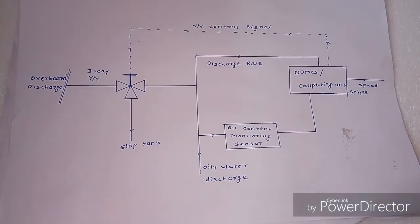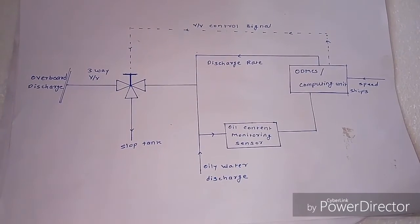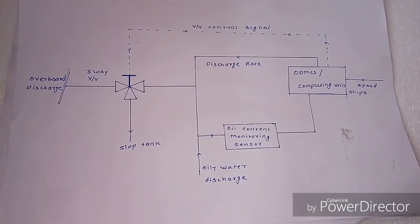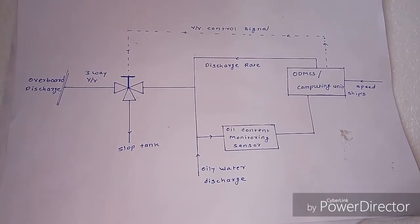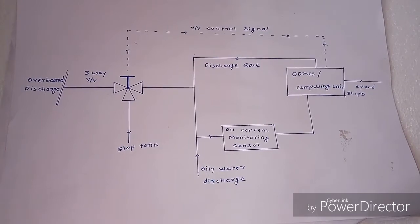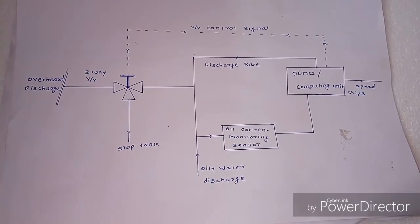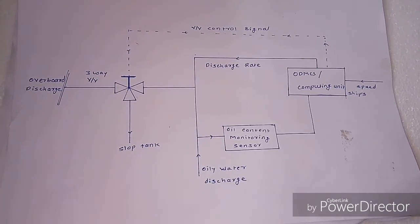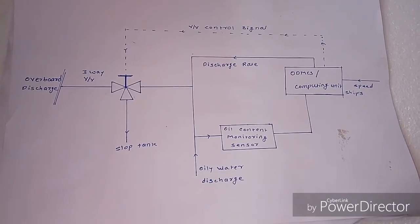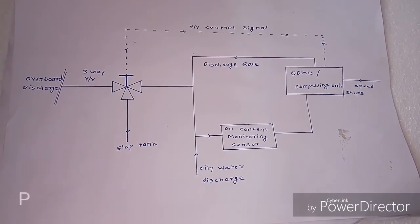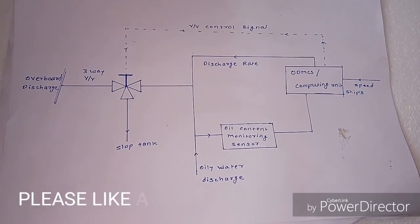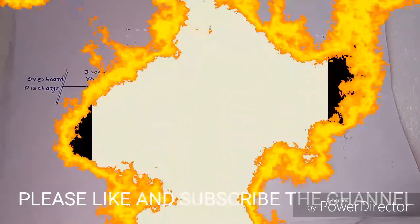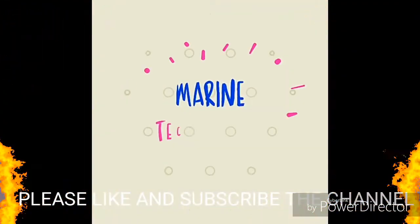The discharge should be 50 nautical miles away from the shore — please consider this point. This is the complete working of the ODMC system. If you have any doubts, please put your comment in the comment box. Thank you.